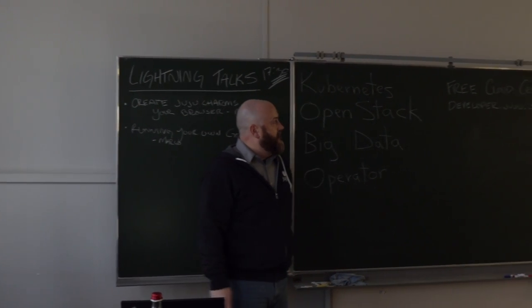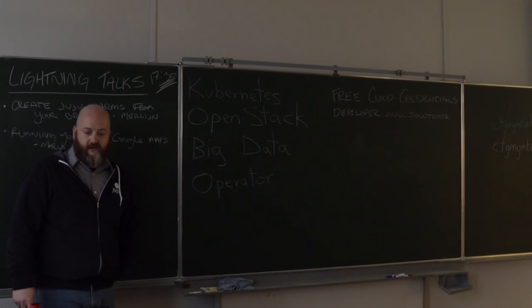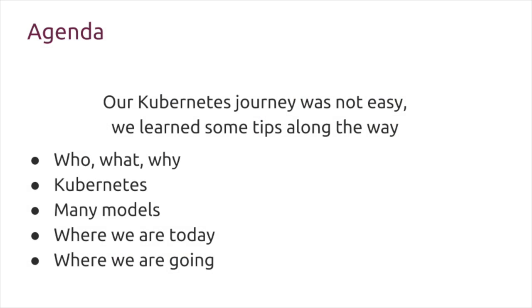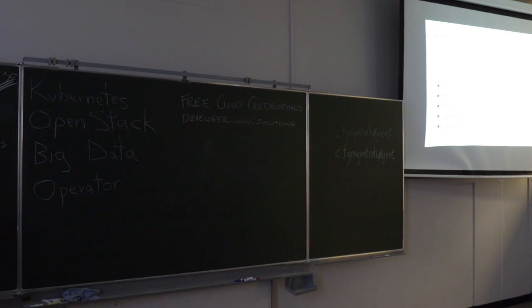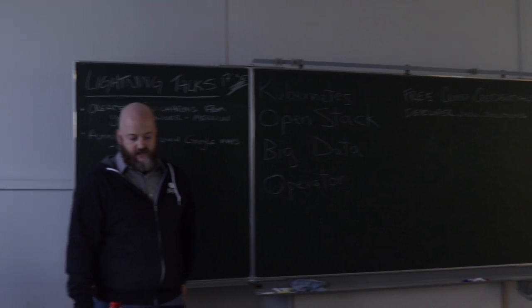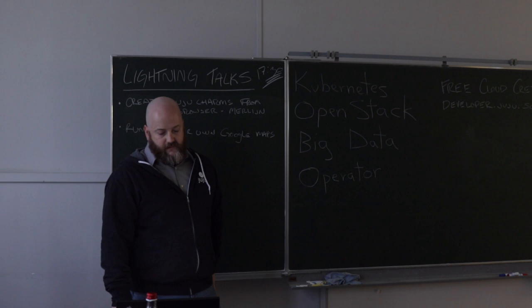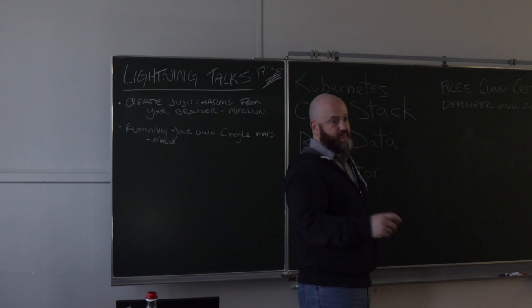Our journey for Kubernetes wasn't easy. In the early days, it was really crazy. Everything was changing pretty fast. We learned a lot and our solution has evolved along with the Kubernetes project. We've essentially iterated over Kubernetes over time, and I'm going to show you some of the older iterations and where they were, what the features were, and then how we made it different and better. Each rewrite basically took advantage of new Kubernetes features or new Juju features or both.